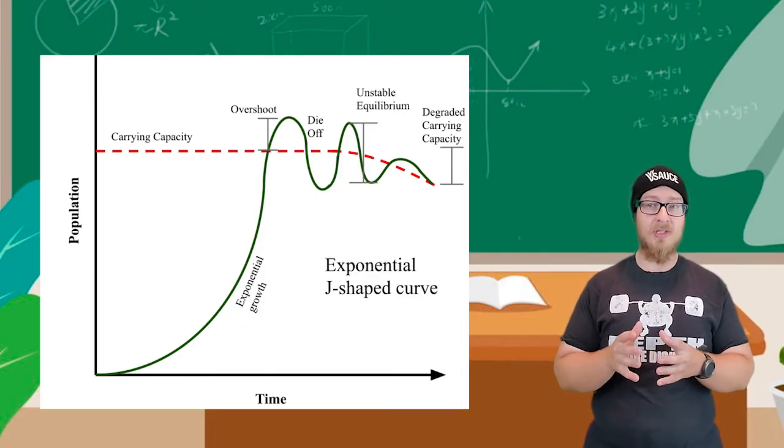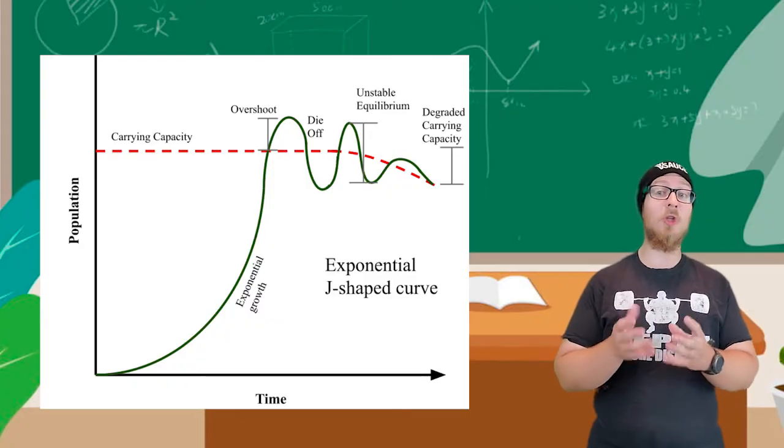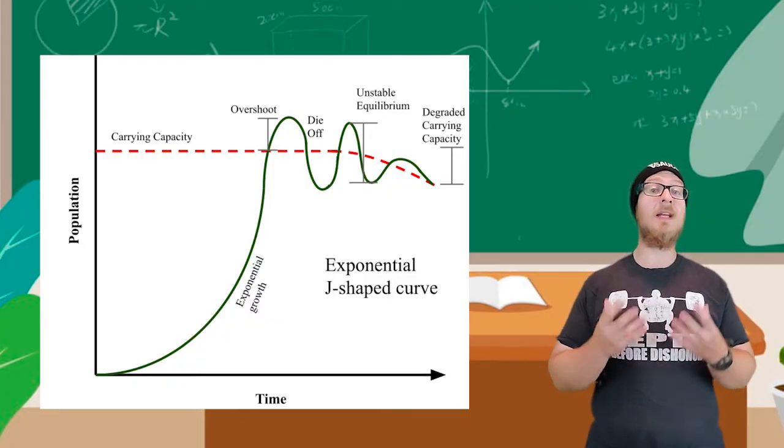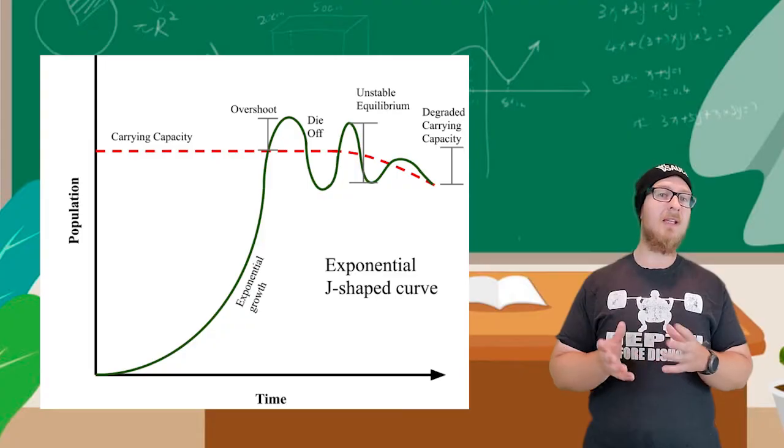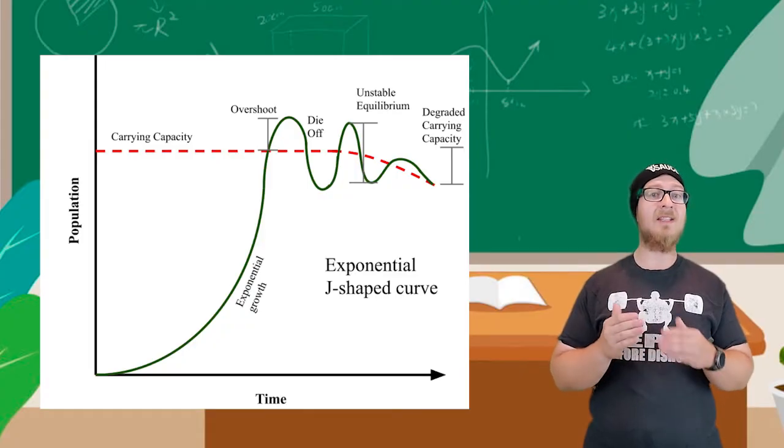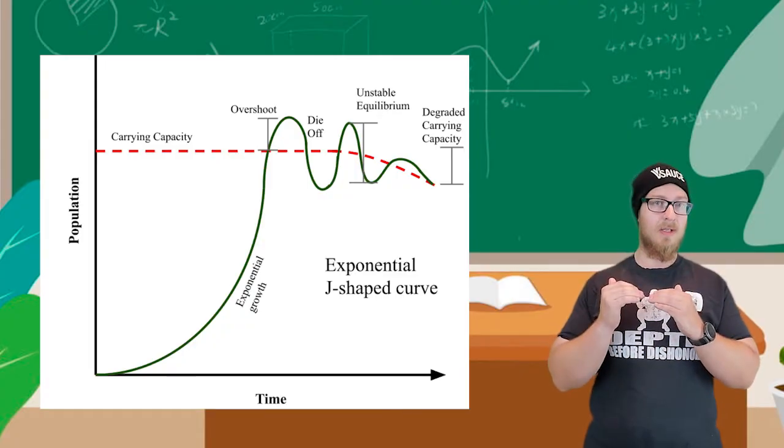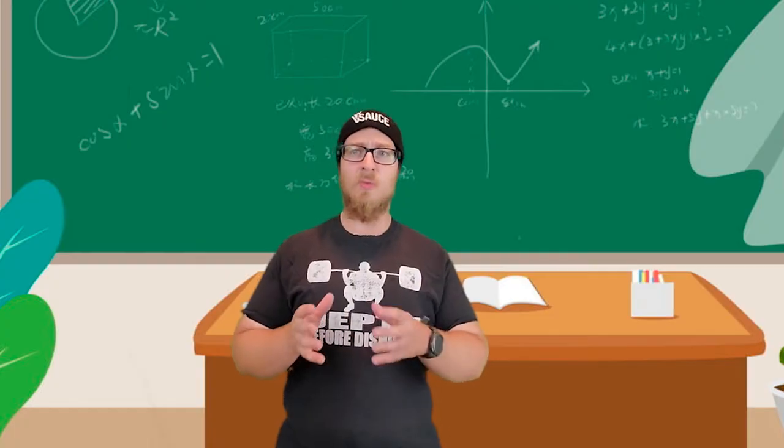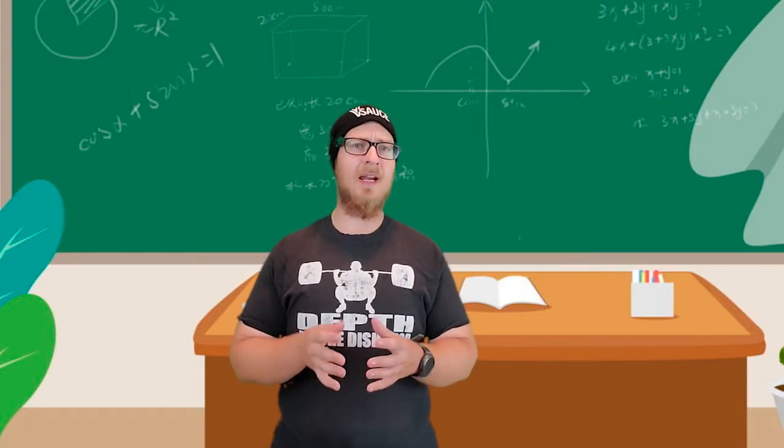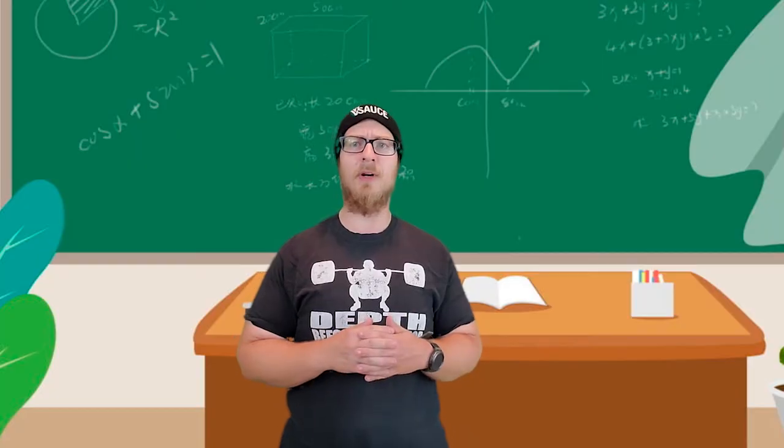Now, if a population stays above the capacity for long enough, the degradation of resources may even lead to the carrying capacity itself decreasing. Some species reproduce faster than others and have different strategies for raising their offspring.